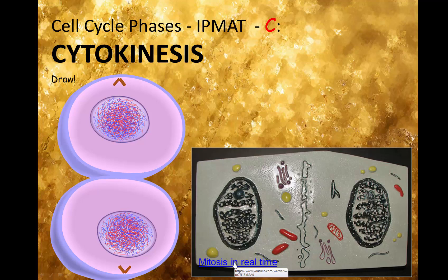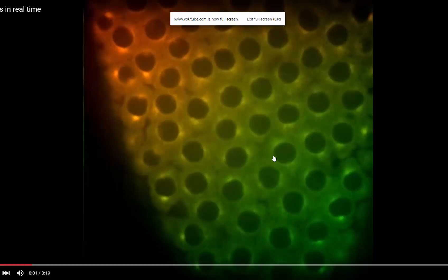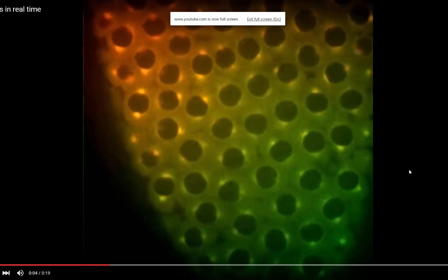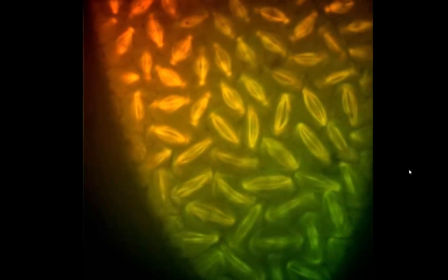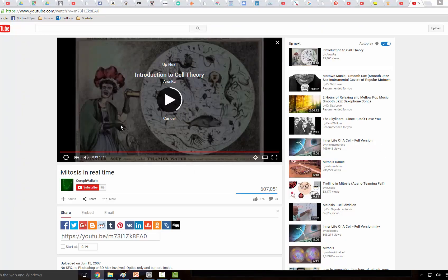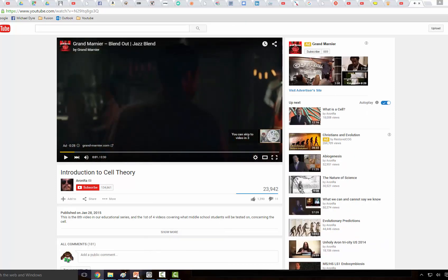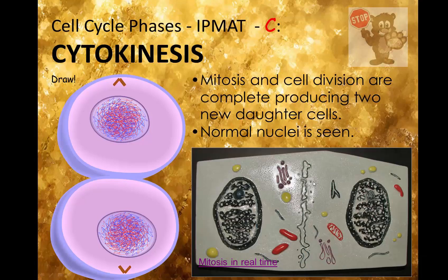And this is going to be mitosis in real time. Mitosis and cell division are complete. We now produce two new daughter cells and a normal nucleus is now seen. These are frog cells going through the process. That is the end of this section and I will put those YouTube sites on the website. Thank you.